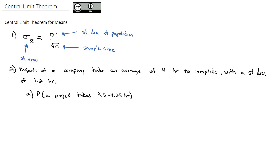As we identify some key information from this situation: the average of four hours to complete — that's my mu. The standard deviation of 1.2 — that's my sigma. As I look at this first problem, we want to know the probability that a single project takes between 3.5 and 4.25 hours. Because we're talking about a single project, not a group that's been averaged together, we're going to solve this much like we've solved problems in the previous videos.